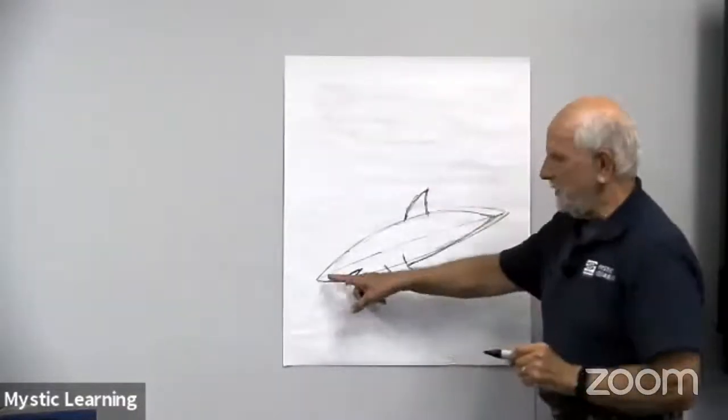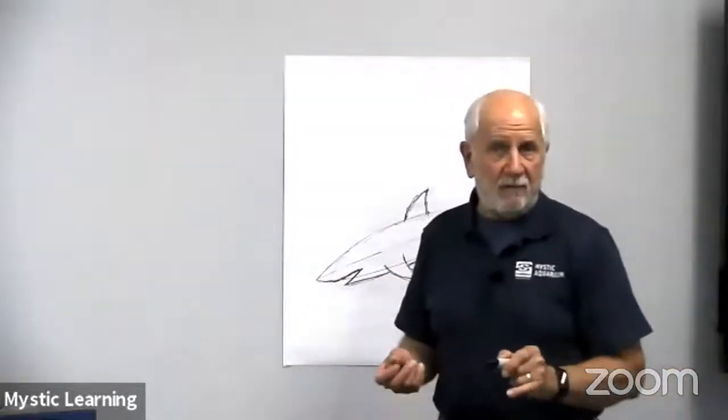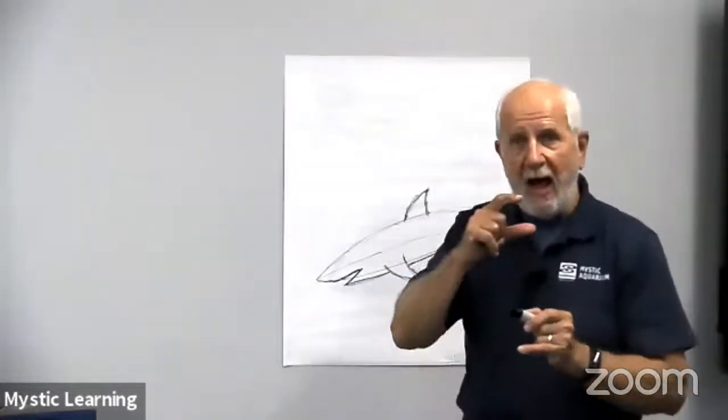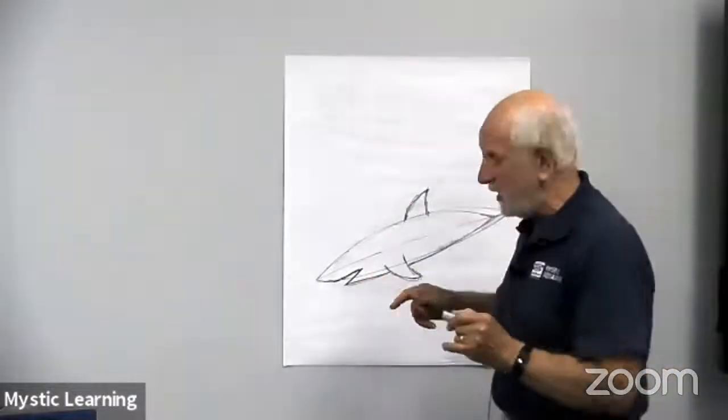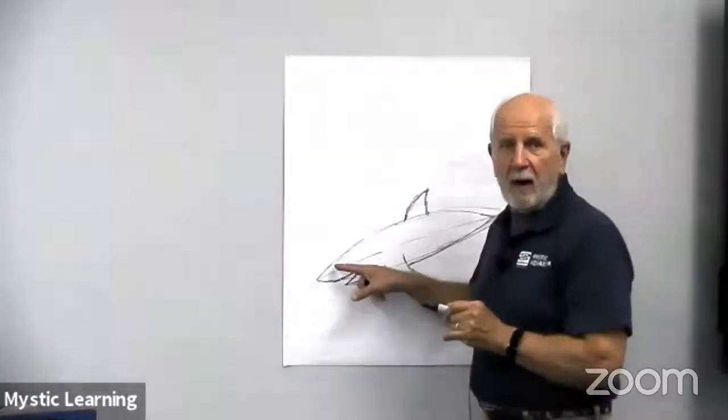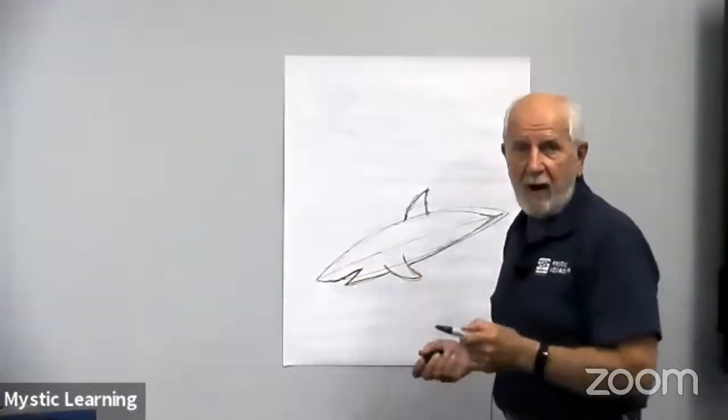Now, remember, the mouth is down at the end of their body like a lot of fish is. Fish have their mouths right at the front of their bodies. Whereas sharks have their mouths underneath the main part where their nose would be, or their eyes would be.